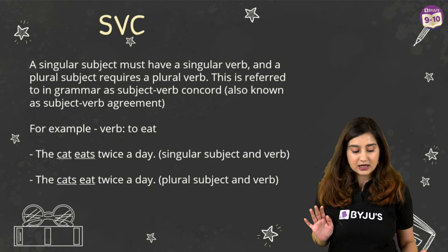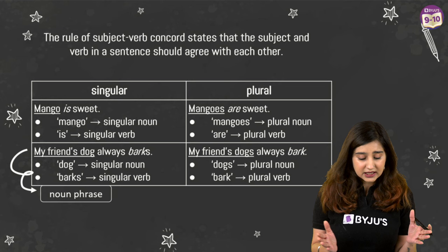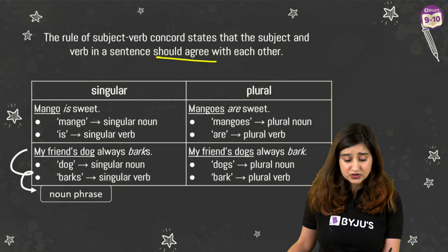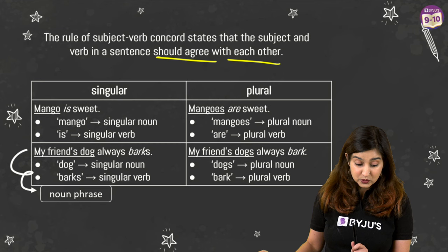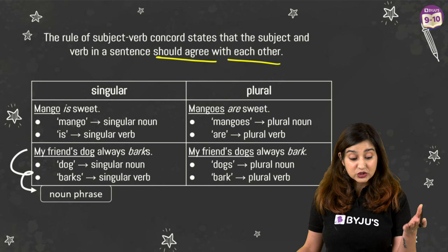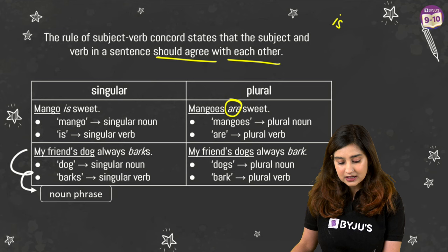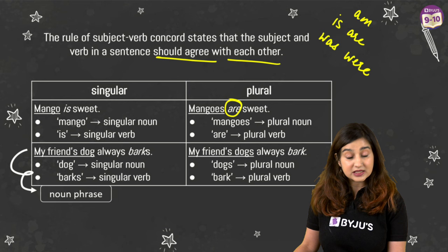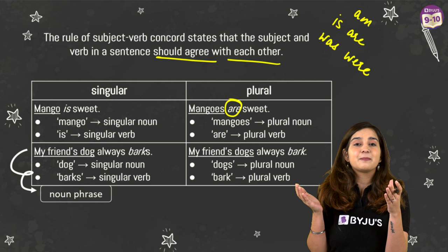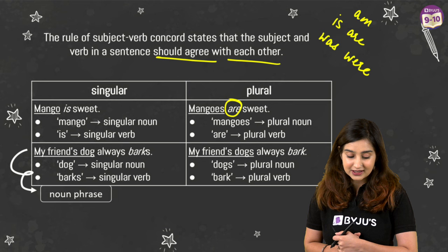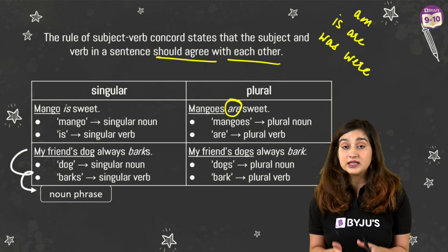Here again you can see more examples. The rule of subject-verb concord states that the subject and verb in the sentence should agree: singular with singular, plural with plural. 'Mango is sweet' — mango is a singular noun and your subject, so we use the verb 'is.' If we make it plural — 'mangoes' — you would use 'are.' Now, is, are, was, were, am — these are also verbs. Don't stay in the mindset that verbs are only action words like dancing, singing, playing, talking. Verbs have a lot of variety. These are present-tense forms of the verb 'be.'